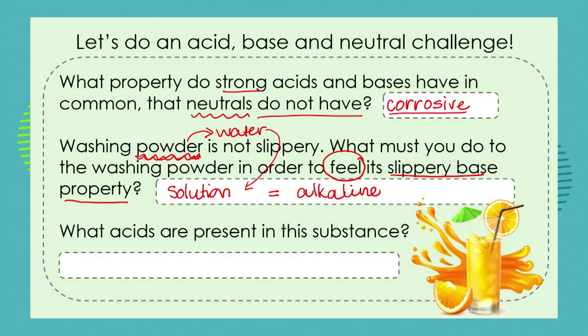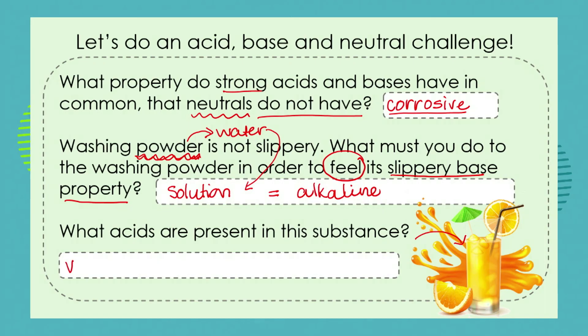What acids are present in orange juice? There are two acids present in it. There is vitamin C — and the fancy name for vitamin C is ascorbic acid — and all citrus fruits have another acid called citric acid. Did you remember the names of those common acids that you have in your homes?